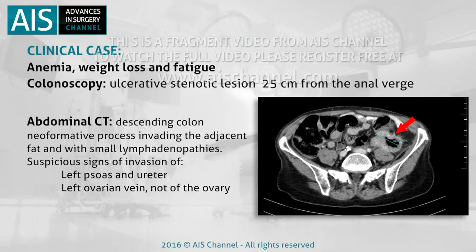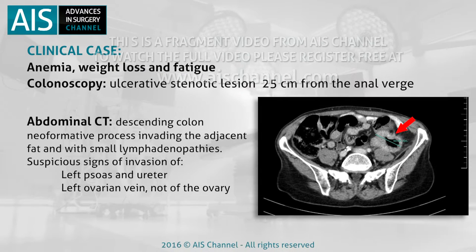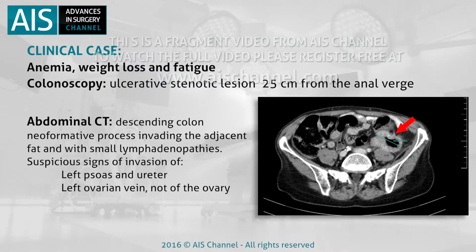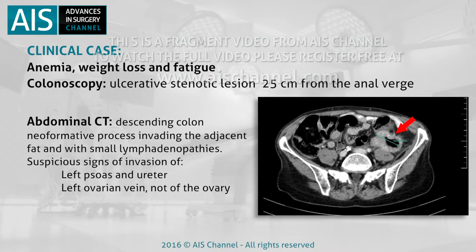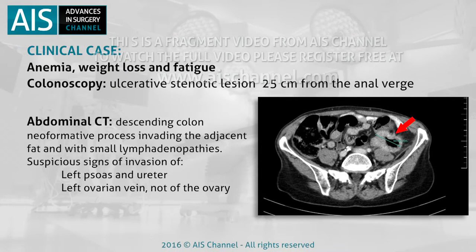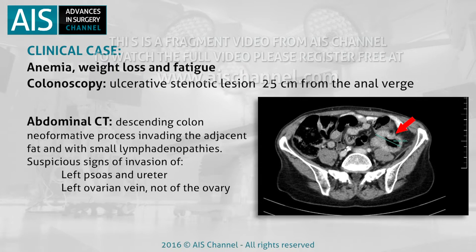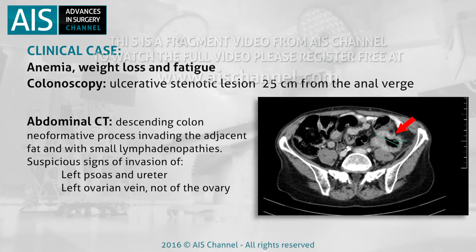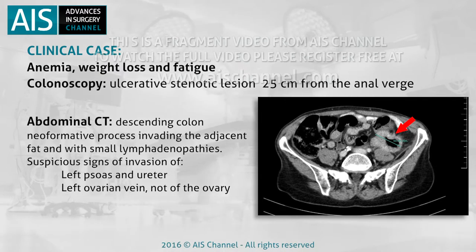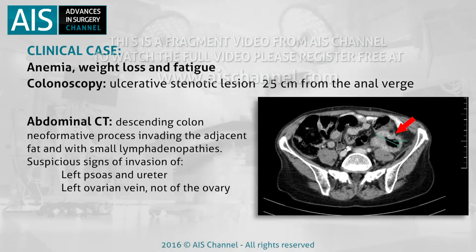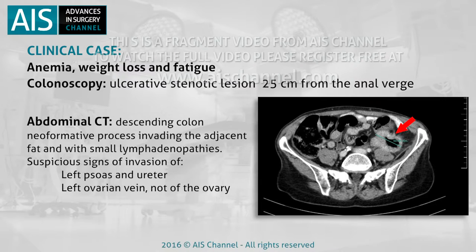The patient presented with significant anaemia, weight loss and fatigue. A colonoscopy was performed showing an ulcerative stenotic lesion 25 centimetres from the anal verge, which did not allow endoscope passage. To complete the study, we performed an abdominal CT which showed a mass compatible with a descending colon primary neoformative process with a diameter of 5 centimetres, invading the adjacent fat and with small lymphadenopathies.